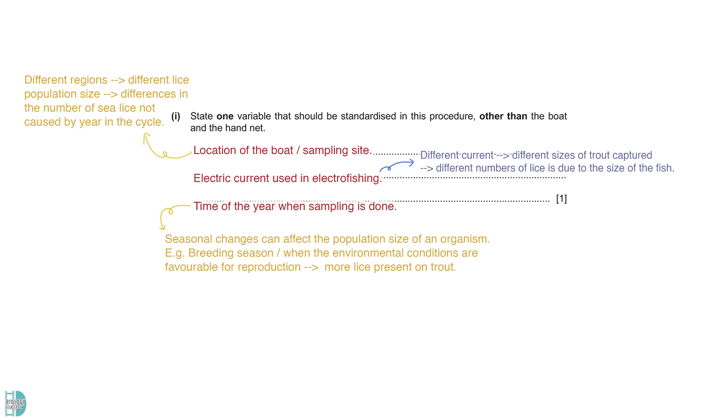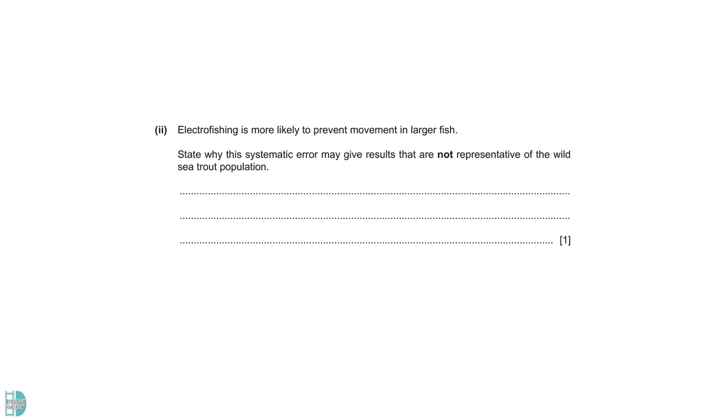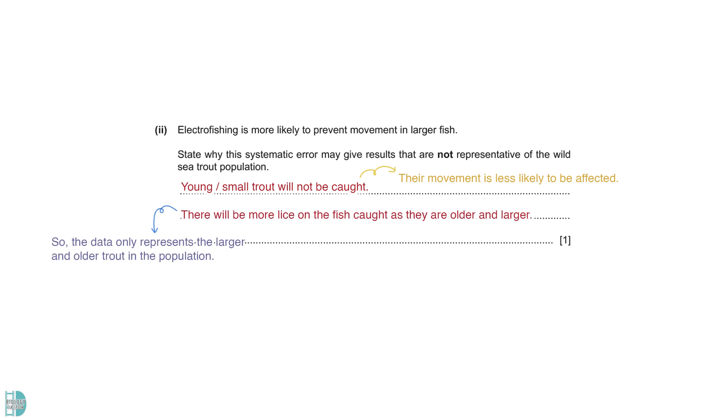Lastly, sampling should be done at the same time of the year. Seasonal changes can affect the population size of an organism. For example, during the breeding season or when the environmental conditions are favorable for reproduction, there will be more lice present on trout. Question 2: Electrofishing is more likely to prevent movement in larger fish. You are asked to state why this systematic error may give results that are not representative of the wild sea trout population. If the movement of smaller fish is less likely to be affected, the younger trout will not be caught. The lice number on trout only represents the larger and older trout in the population.